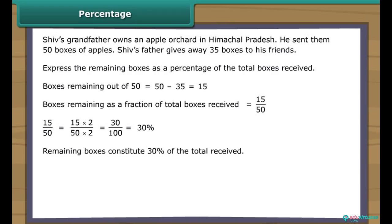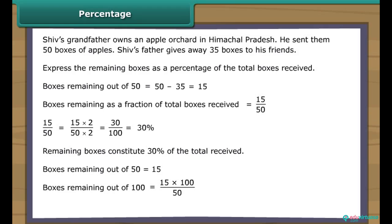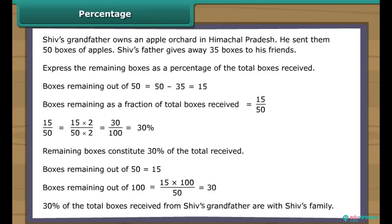Let us attempt the same question with the help of the unitary method. Boxes remaining out of 50 equals 15. Boxes remaining out of 100 equals 15 upon 50 into 100, which equals 30. Therefore, 30% of the total boxes received from Shiv's grandfather are with Shiv's family. Both methods yield the same answer.